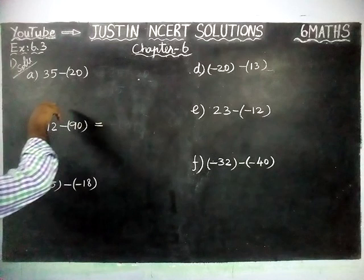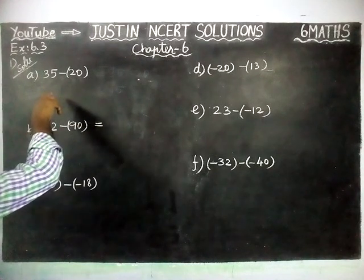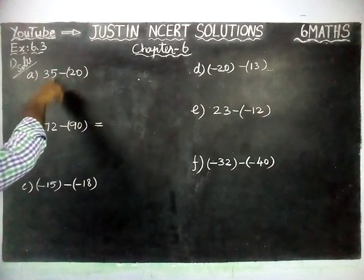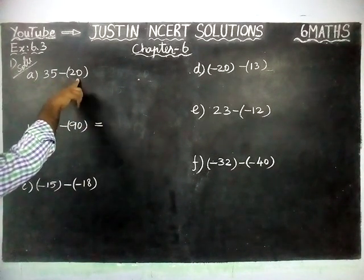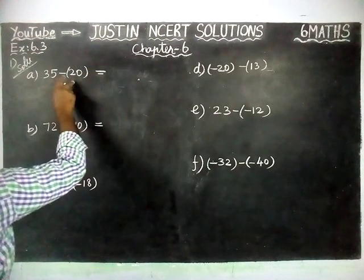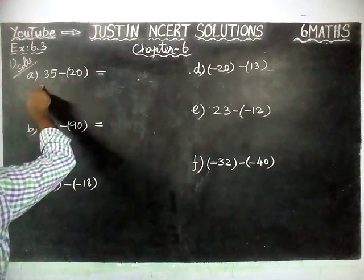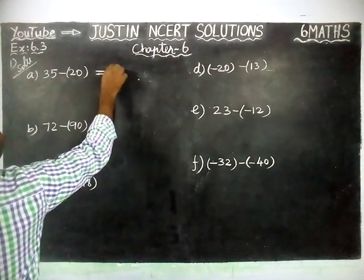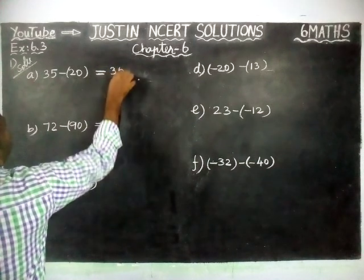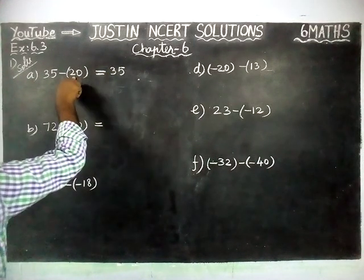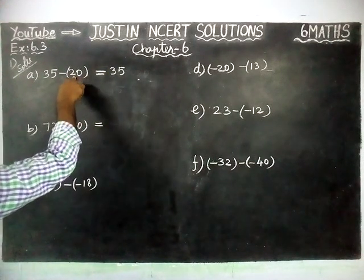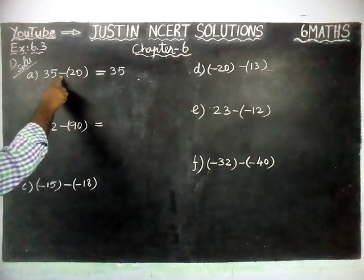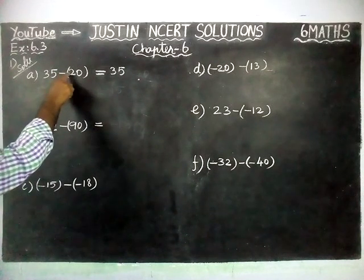The first given two integers — we have to find the subtraction of 35 minus 20. Both are positive numbers, but here we have to subtract. So minus into plus.